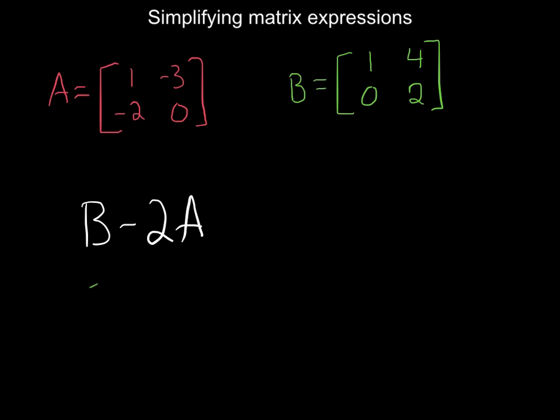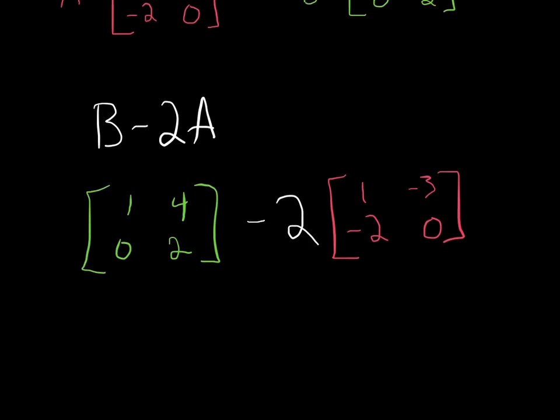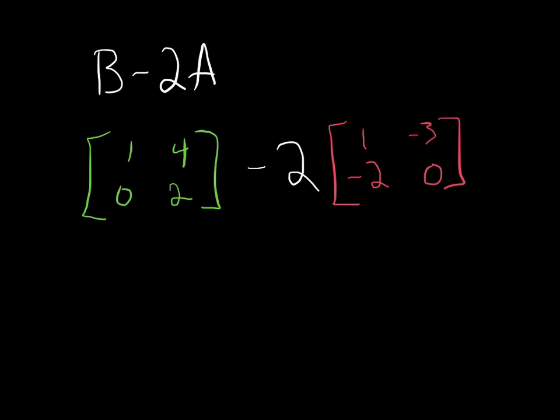So I have matrix B, which is 1, 4, 0, 2, minus two times my A matrix, 1, negative 3, negative 2, 0. Now, just like in regular real numbers, we have to follow the order of operations. So to solve this or simplify this expression, we have to do the matrix scalar multiplication first. So I'm going to distribute this negative 2.